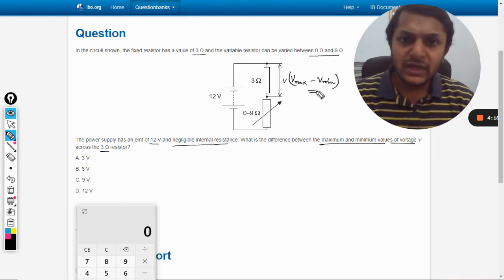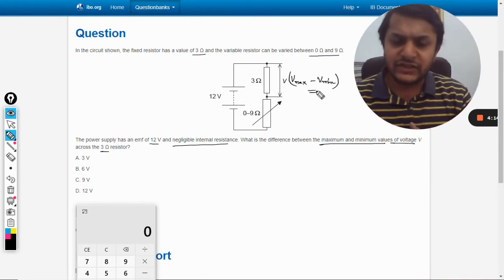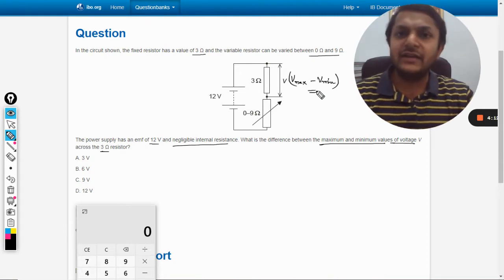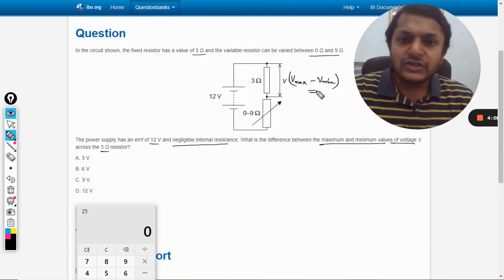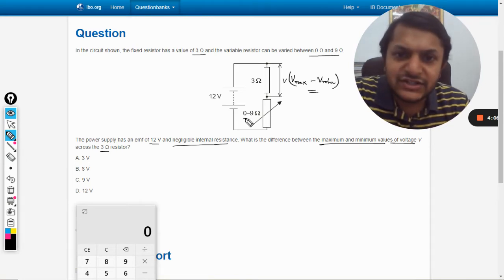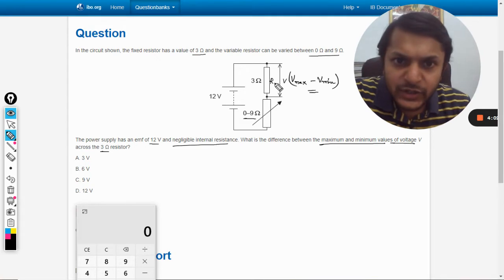The maximum voltage, if you think, will obviously occur when there is no other resistor other than 3 ohms. So this resistor should be having the minimum value at that time. In such a case, this is R1 and this is R2.